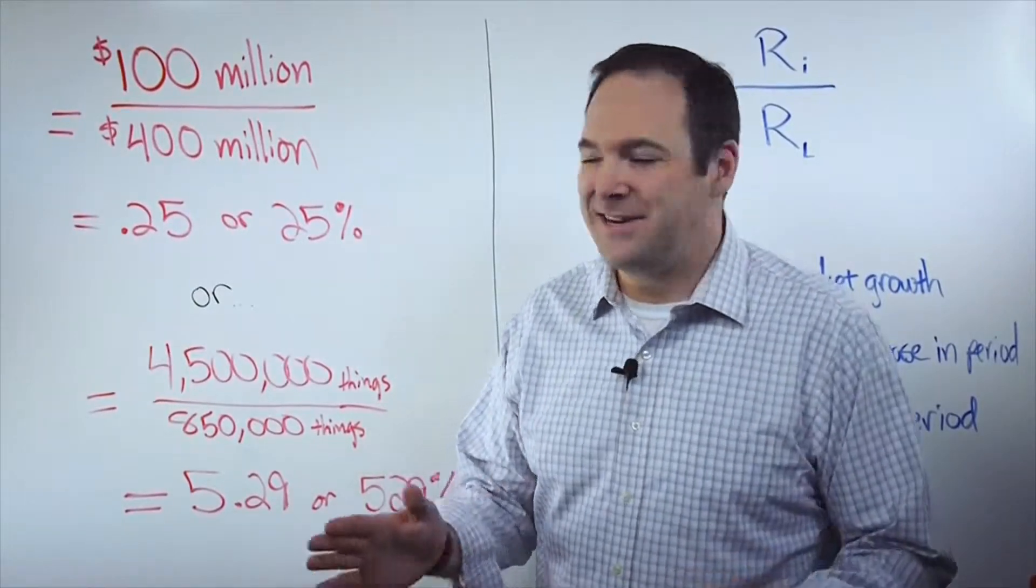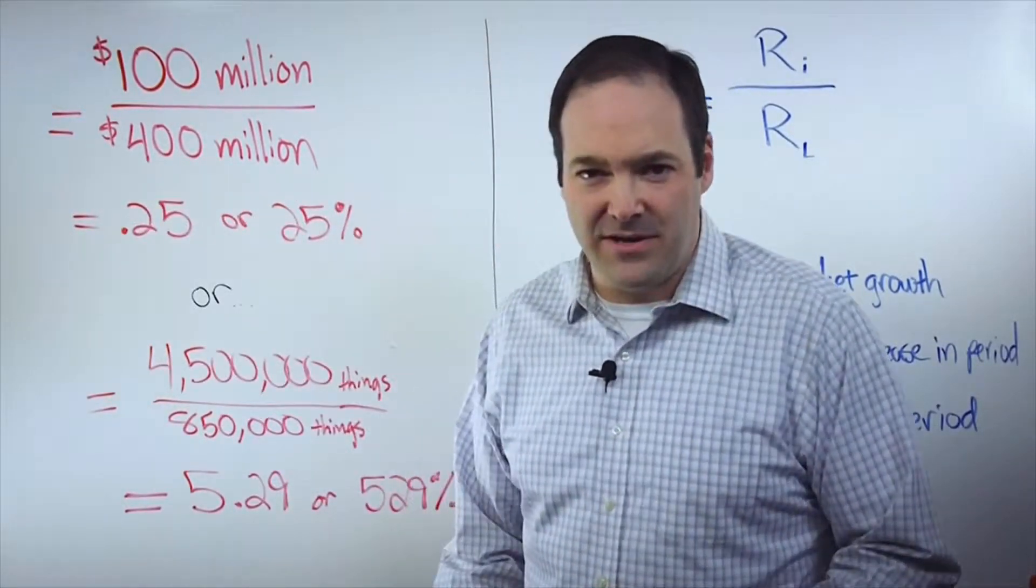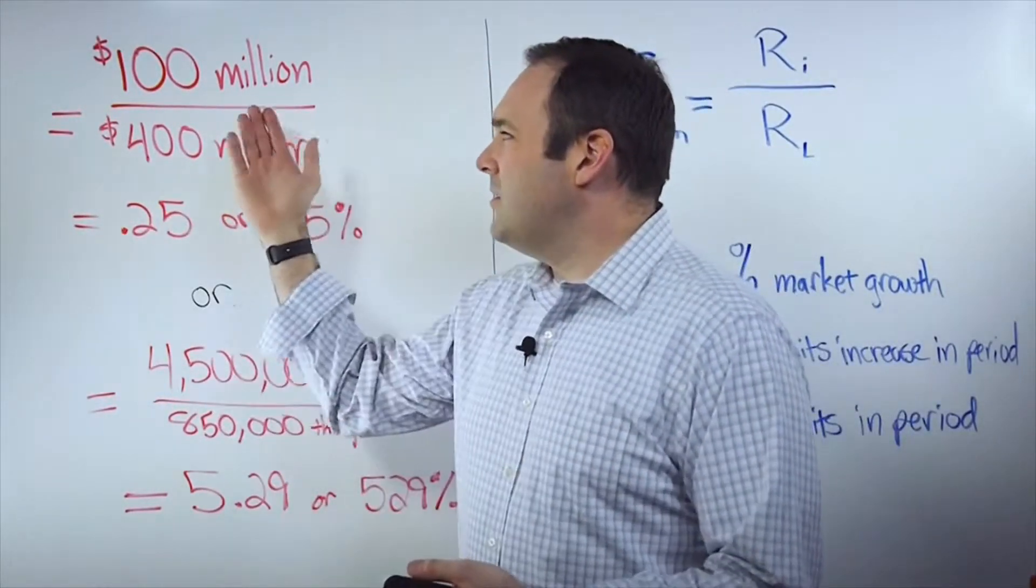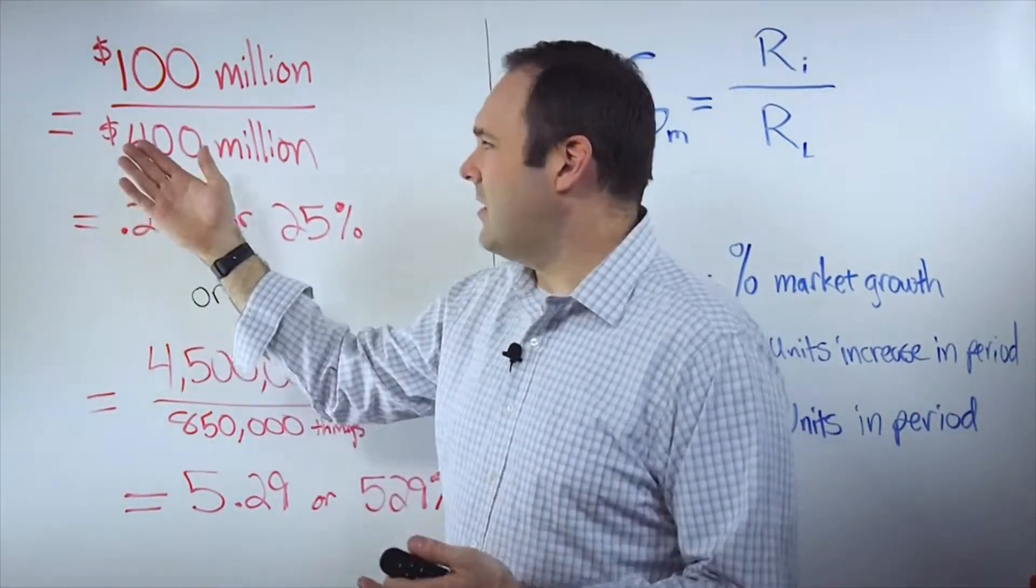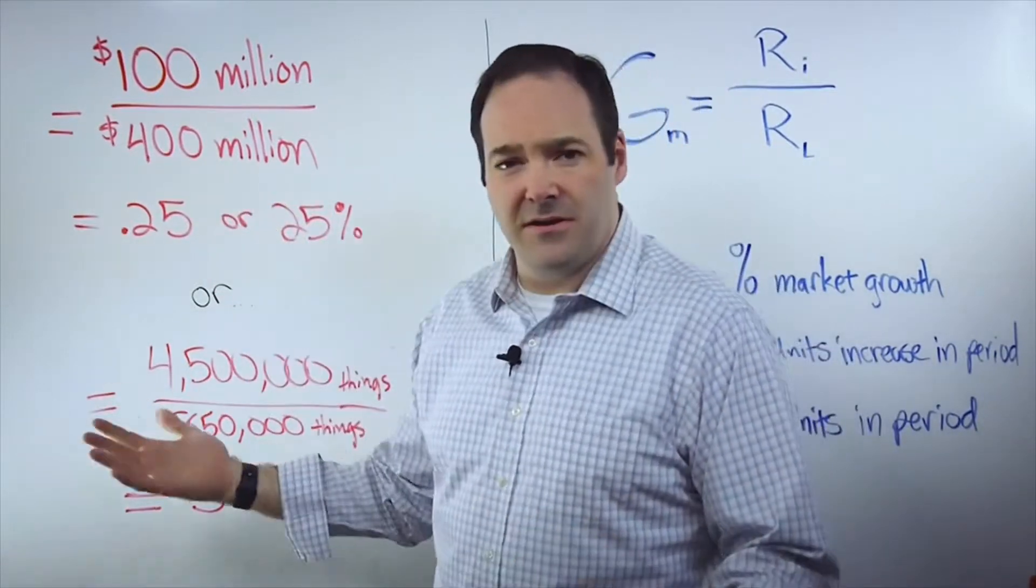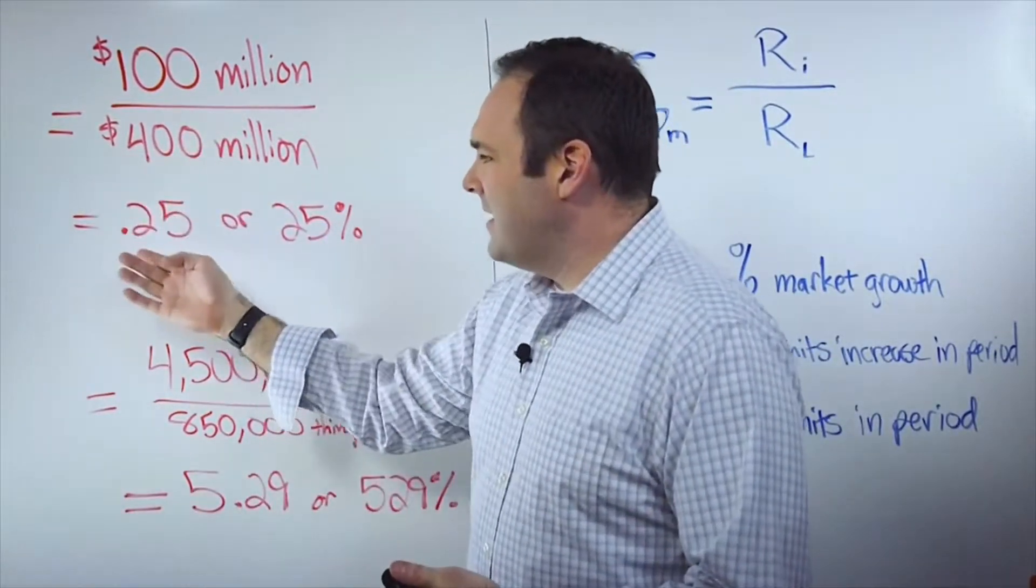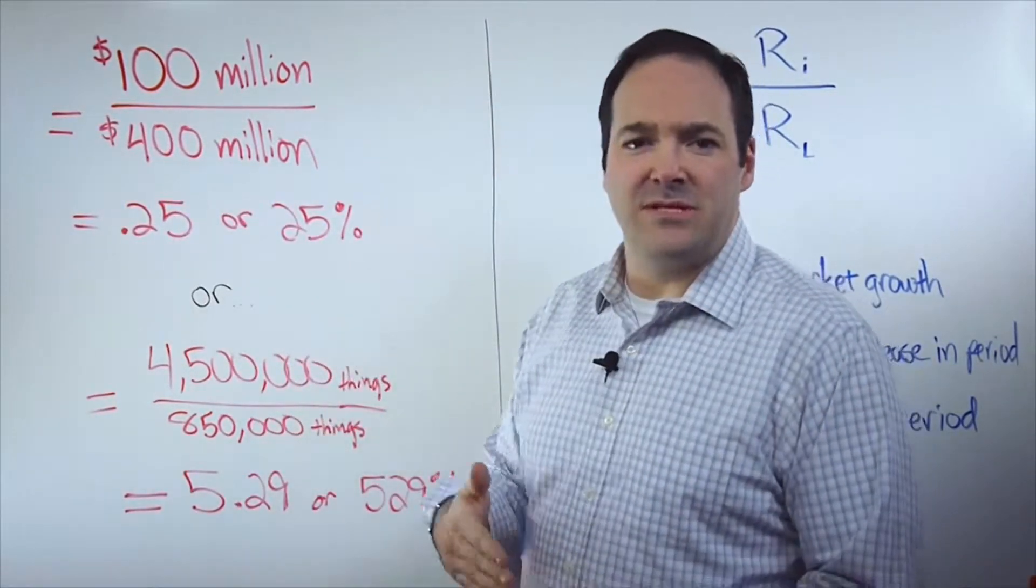So let's assume last year you did $400 million worth of revenue, and then this year you've done $500 million. So that's $100 million on top or an increase on the $400 million. So to figure out your growth rate, you do the math, and it's 0.25 or a 25% growth rate.